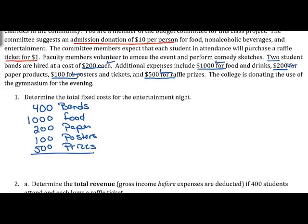All of this we're going to have to pay for no matter how many people attend our event. Adding these up gives us total fixed costs of $2,200.